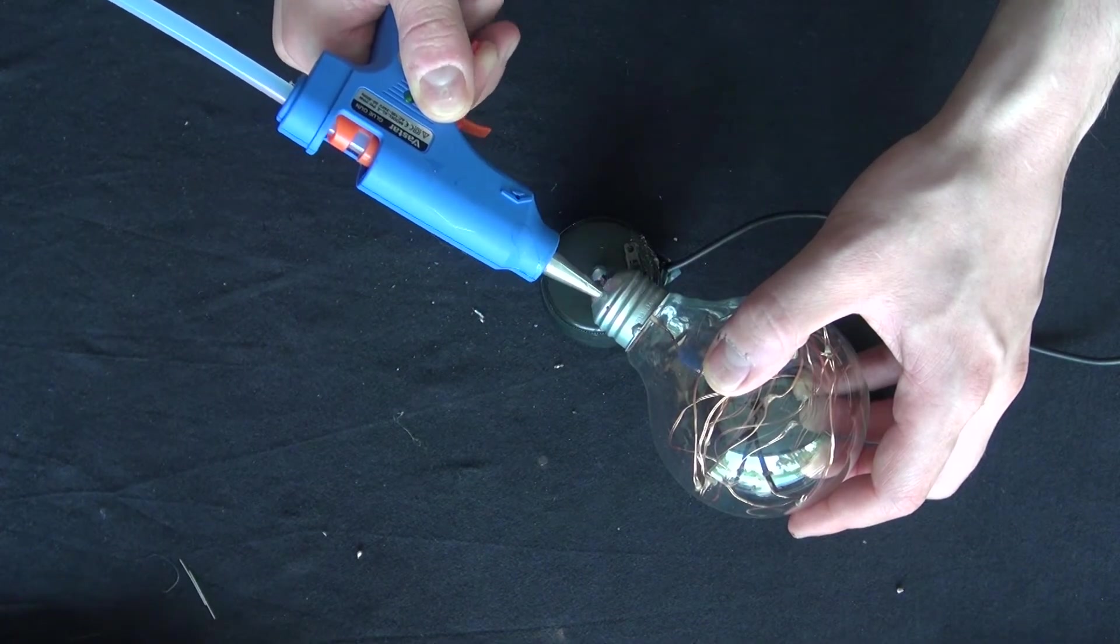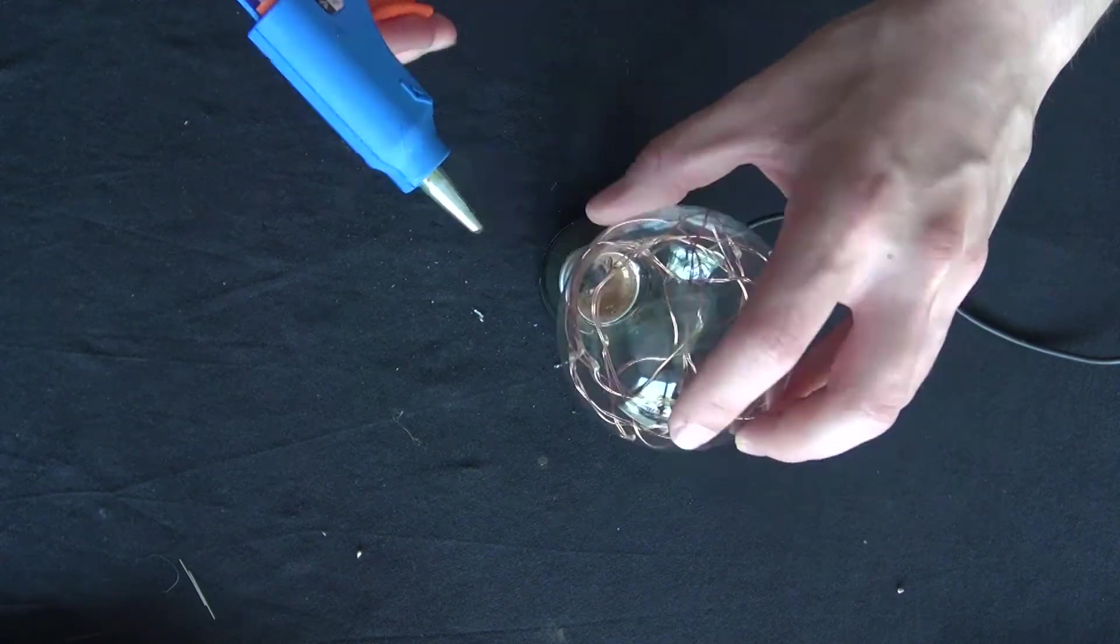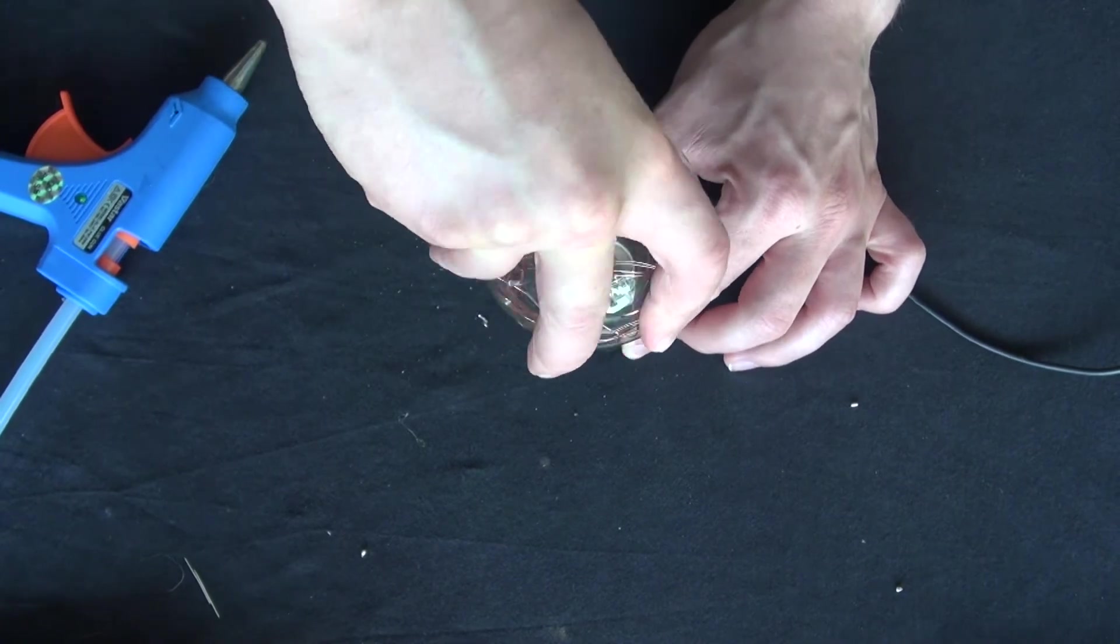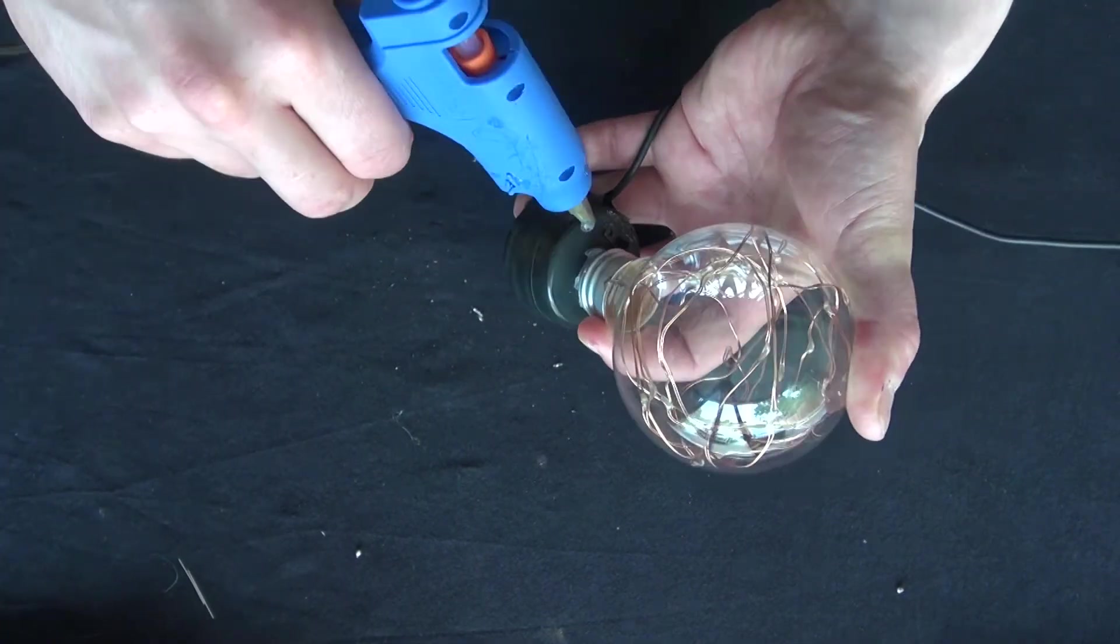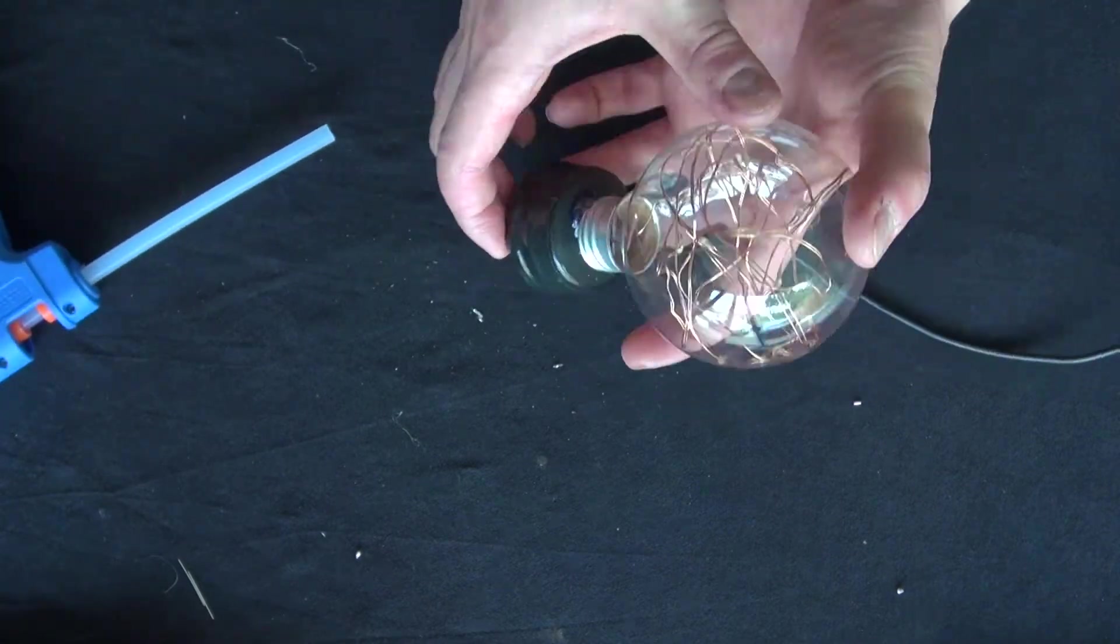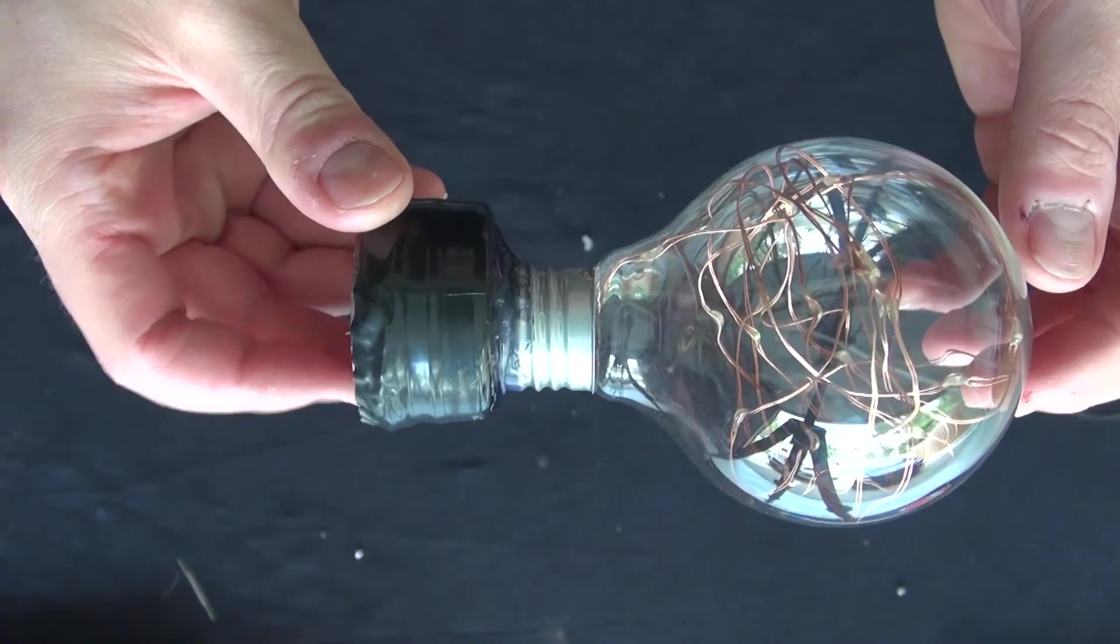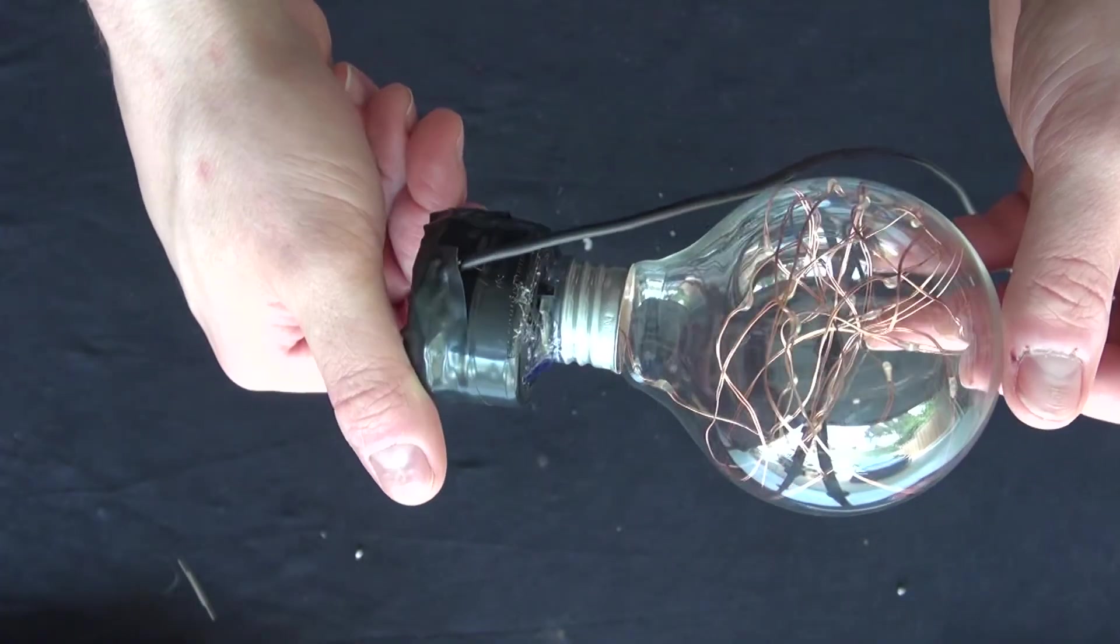Now glue in the light bulb and then you will be almost done. Now let's glue all the way around to make it solid. And there you have it. It's all glued into place and now the project is done.